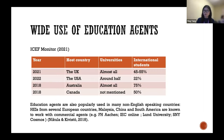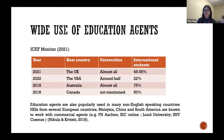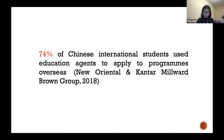Education agents are widely used by both English-speaking and non-English-speaking host countries and prospective international students. In the UK, most universities work with education agents through direct or indirect partnerships, and it's estimated around 45 to 55% of international students were recruited through education agents. According to a local market report in China, in 2018, around 74% of Chinese international students used education agents to apply for overseas programs.